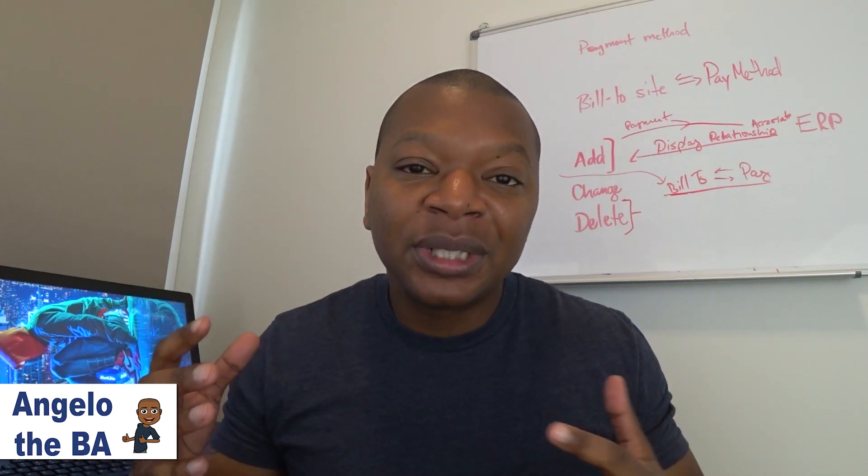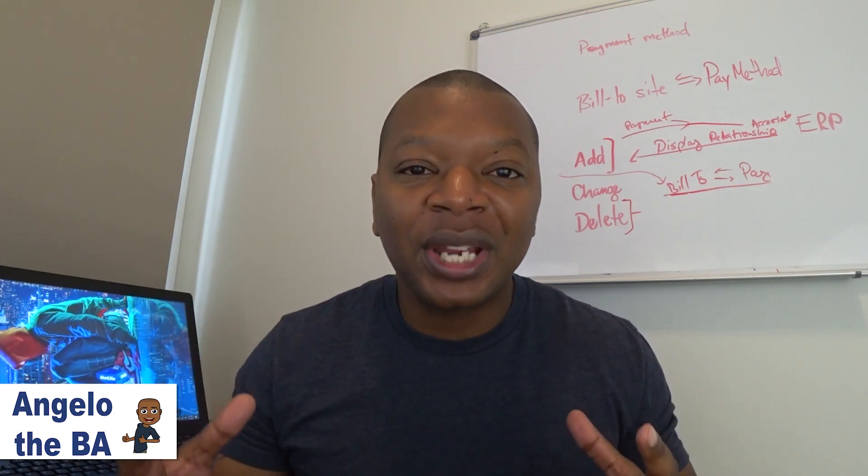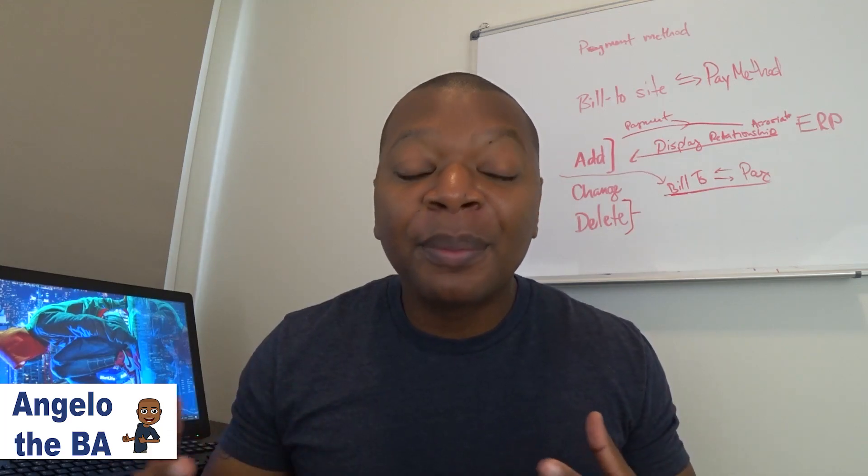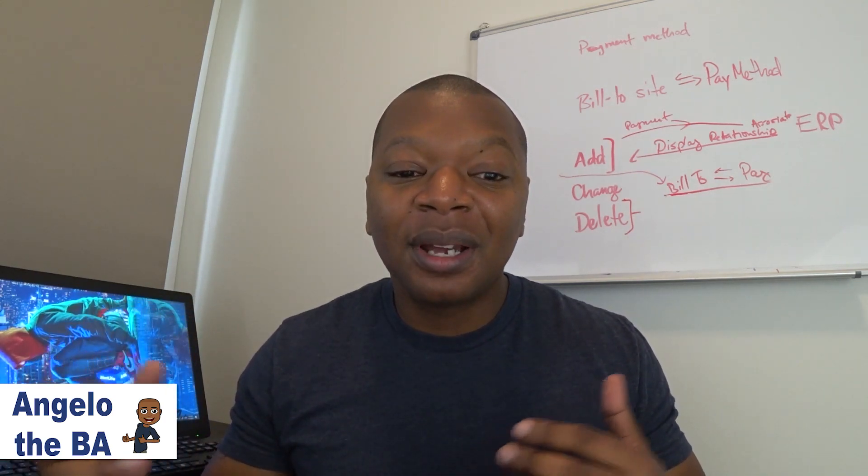I learned that for orders, there are really two levels. There's the header-level information — the more static information that doesn't really change once you place the order — things like the customer name or the date the order was placed. Then there are the line-level items, which are more dynamic. As an order progresses through its manufacturing process, all the lines have different levels of completeness and statuses, things could be shipped, individual lines could be shipped. So there's a lot more that changes at a line level, but at a header level, almost nothing really changes other than the entire order being essentially complete.